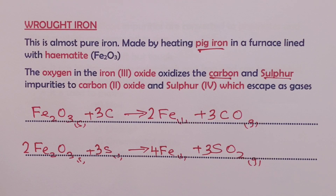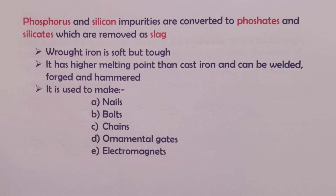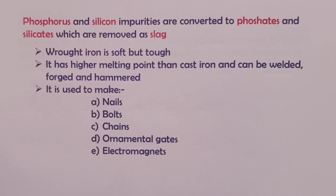Apart from the removal of carbon and sulfur from pig iron to obtain wrought iron, phosphorus and silicon impurities are also converted to phosphates and silicates, which are removed as slag. We therefore obtain wrought iron, which is purer than pig iron because these impurities have been removed.